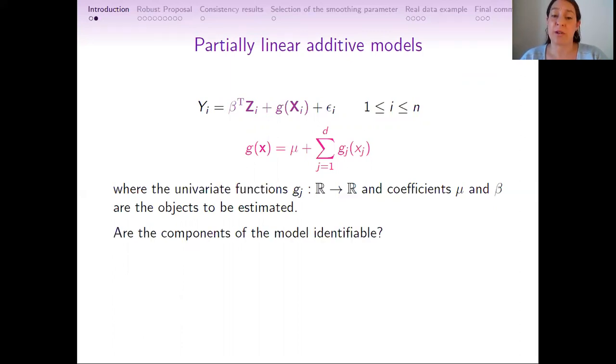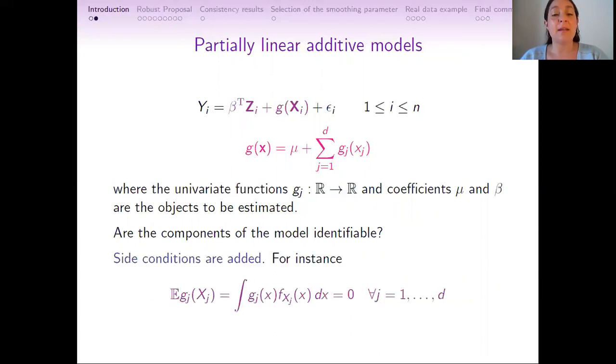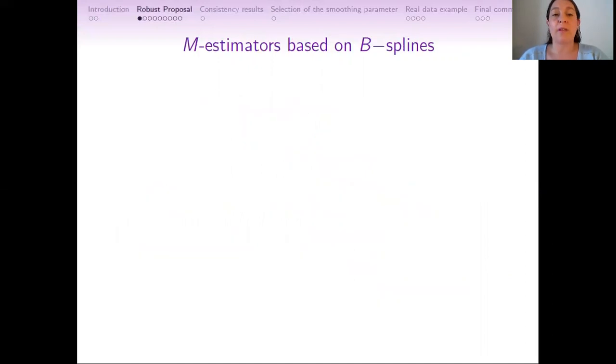But are the components of the model identifiable? The answer is no, unless we add side conditions. The most common conditions consist of assuming that the expectation of g_j(X_j) is zero. Under these models, we are going to propose M-estimators based on B-splines.